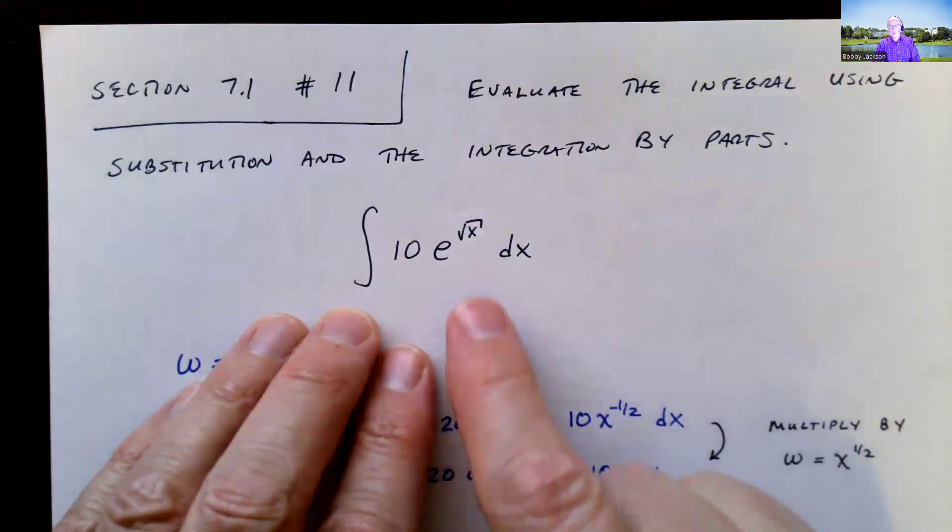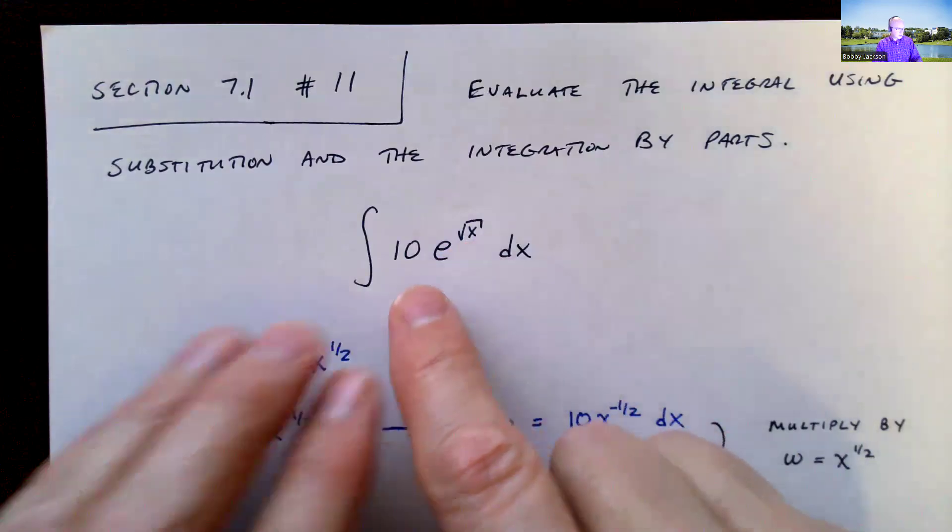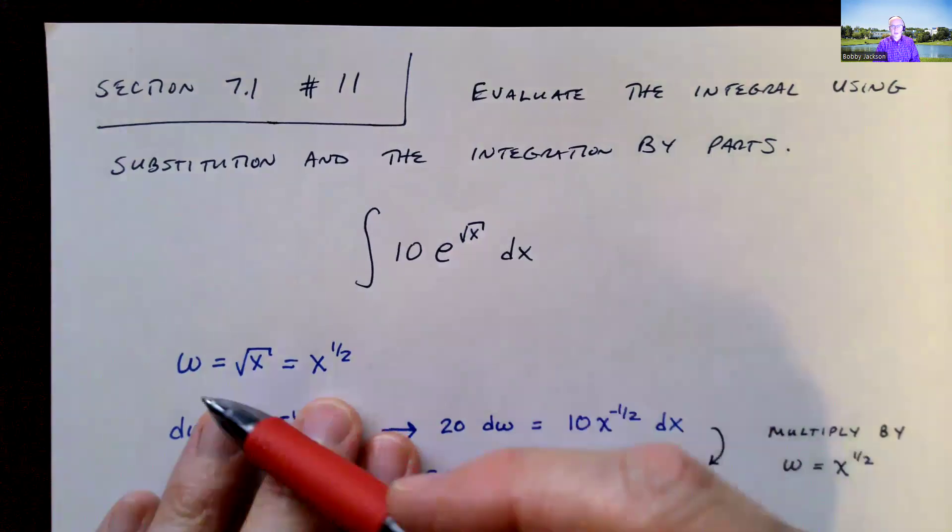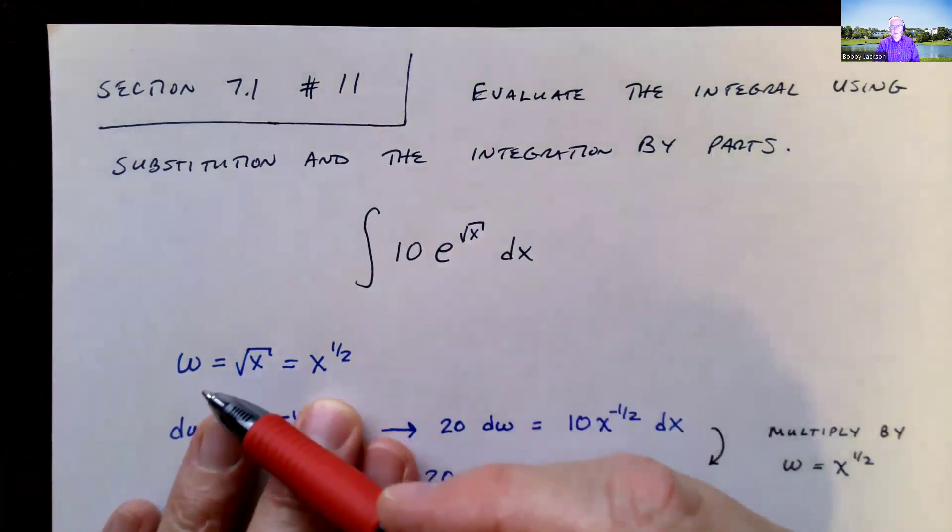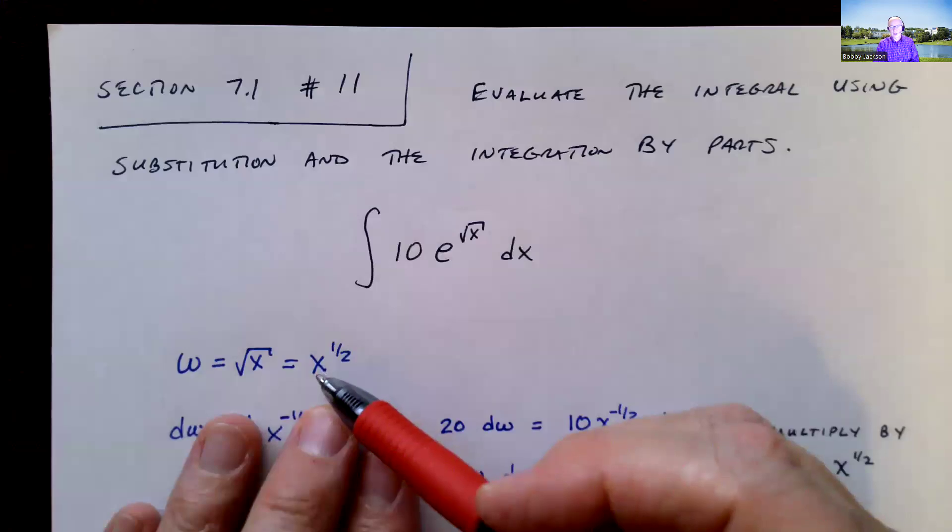And how can we do this with substitution? First of all, I see e to the square root of x. So let's let u, or in this case w, because I'm going to be using u for the integration by parts. Let w be the square root of x, which is x to the one-half.